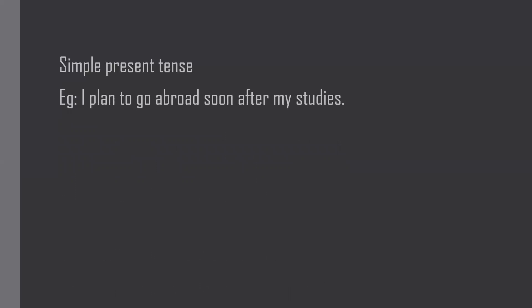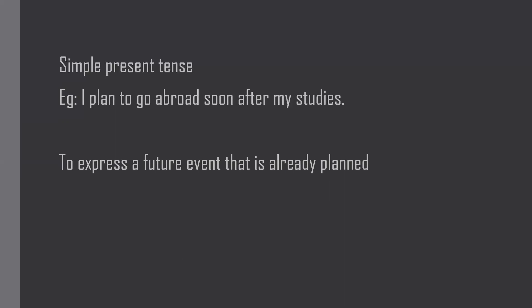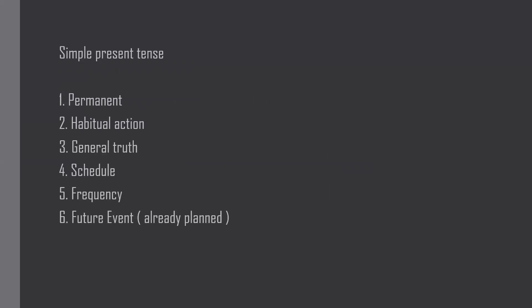'I plan to go abroad soon after my studies' — this is a pre-planned action. To express a pre-planned future action, we use simple present tense. So to summarize: simple present tense is used to express a permanent action, a habitual action, a general truth, a scheduled action, frequency, and a future event already planned.